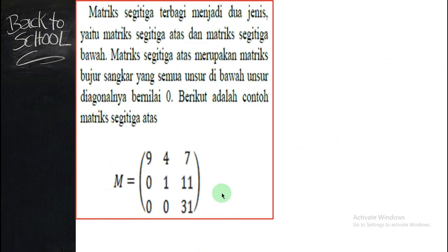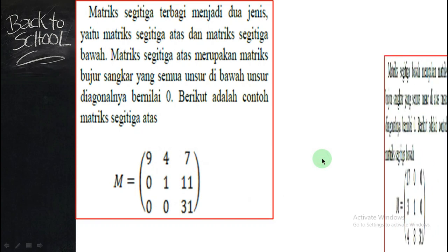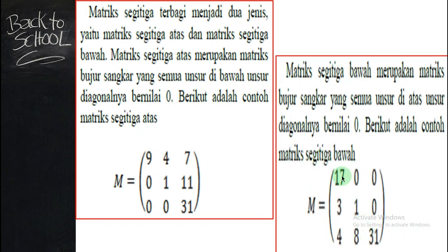Kemudian ada matriks segitiga. Kita bagikan menjadi dua: ada segitiga atas dan segitiga bawah. Matriks segitiga atas adalah matriks yang elemen di bawah diagonal utama bernilai 0. Ini diagonal utama ya, di bawahnya bernilai 0. Jadi elemen di bawah diagonal utama bernilai 0, akan membentuk suatu angka — angkanya membentuk suatu segitiga, letaknya di atas. Kalau ada segitiga atas, ada segitiga bawah. Kalau segitiga bawah, elemen di atas diagonal utama bernilai 0. Nanti bilangannya membentuk suatu segitiga tapi letaknya di bawah. Ingat, matriks segitiga harus matriks persegi atau bujur sangkar.